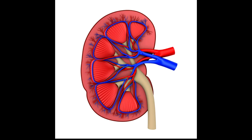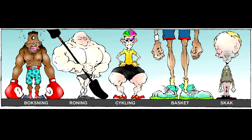EPO gets artificially produced and was originally intended for people who had kidney problems. Nowadays, many sportsmen abuse EPO as a drug to increase their performance. I hope you enjoyed our video about ice hockey — see ya!